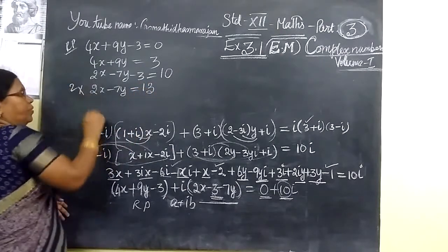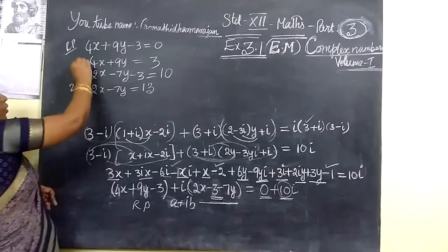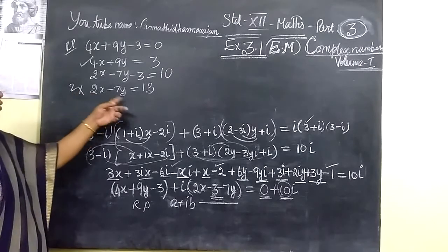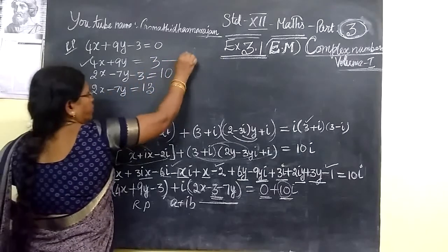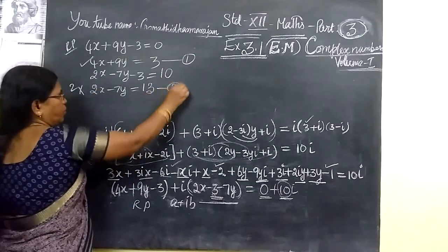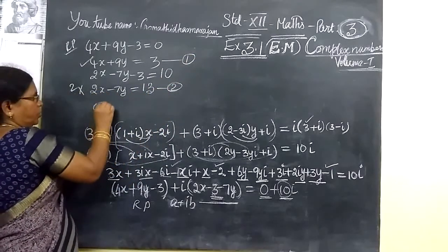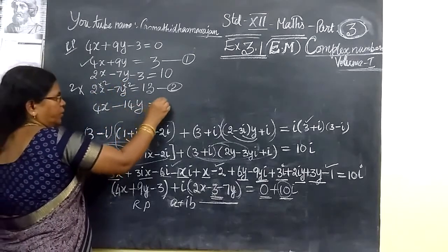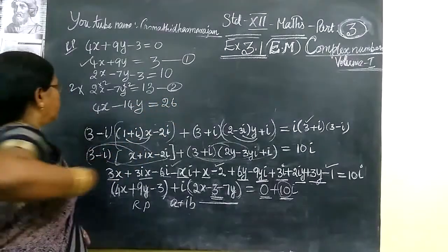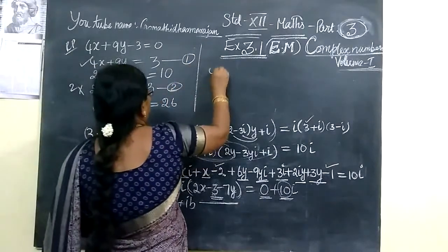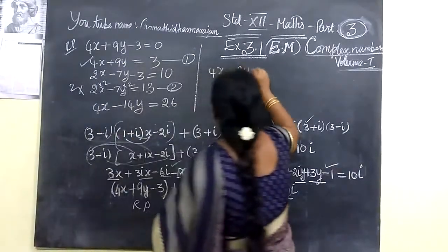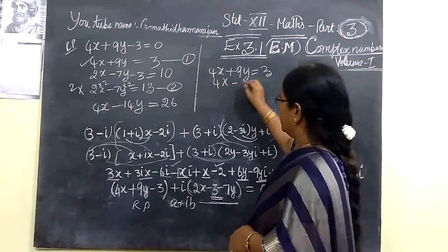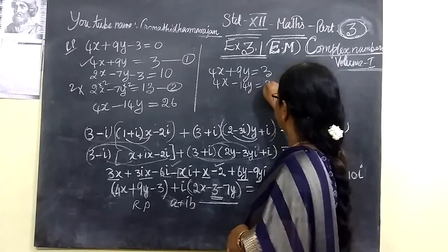Now, to eliminate x from the two equations, multiply equation 2 throughout by 2. So you get 4x minus 14y equals 26. Then write equation 1: 4x plus 9y equals 3, and equation 2 multiplied by 2: 4x minus 14y equals 26.